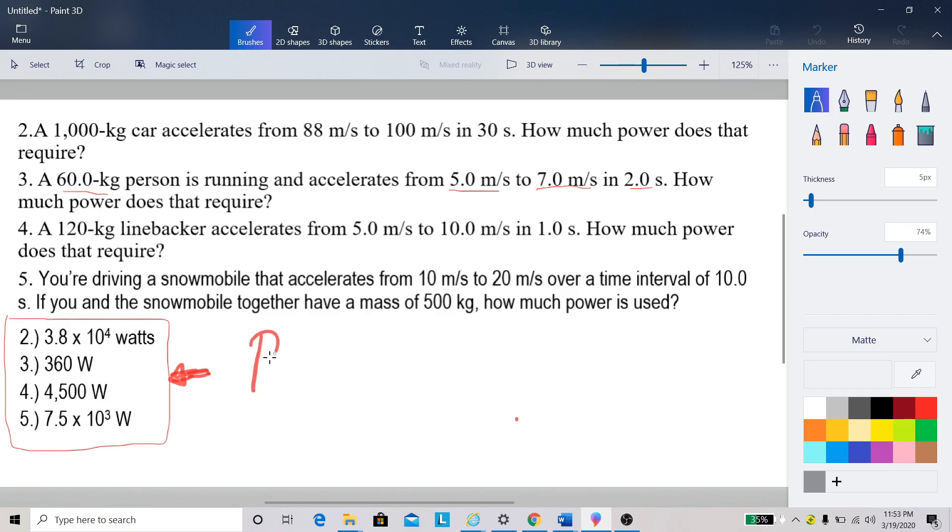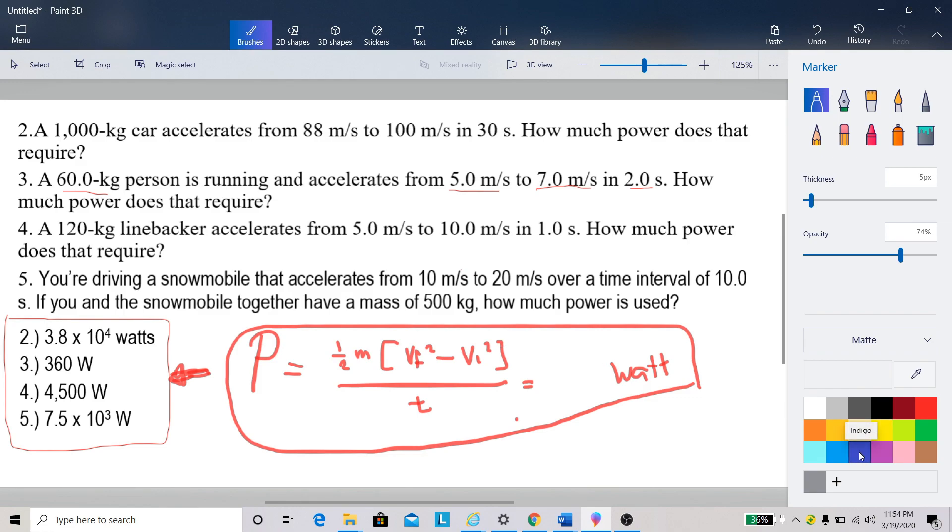We can have a derived formula for power here to be that is one half and then we have m times the quantity vf squared minus vi squared and then all over t, and you will end up with watts as the unit. So try applying this derived formula. This is just the change in kinetic energy which is equal to work, and then that is work over time and you will have the power.